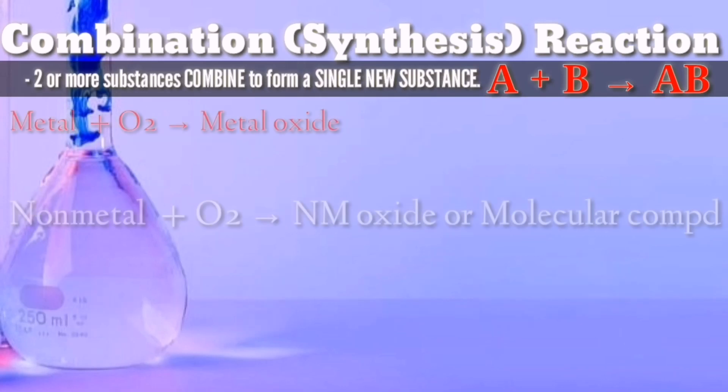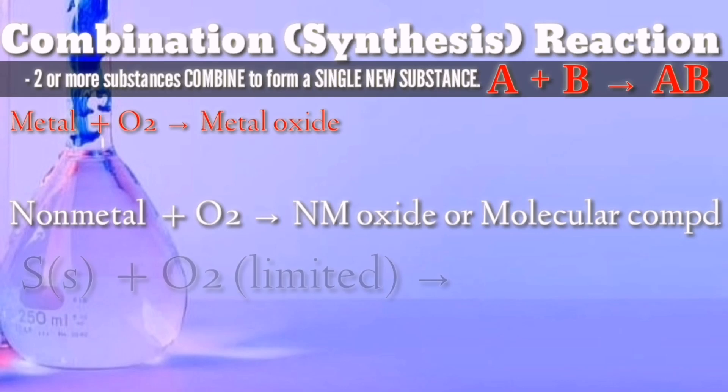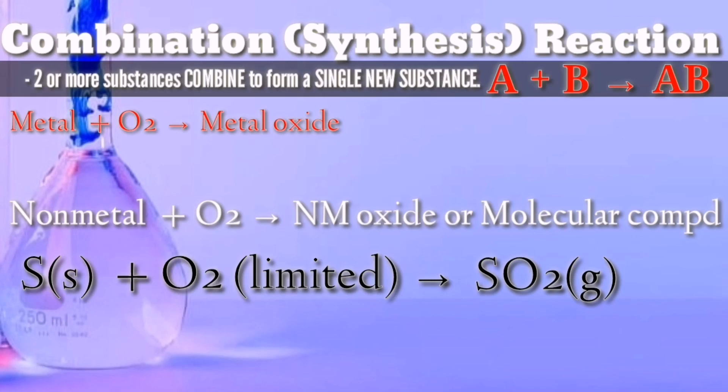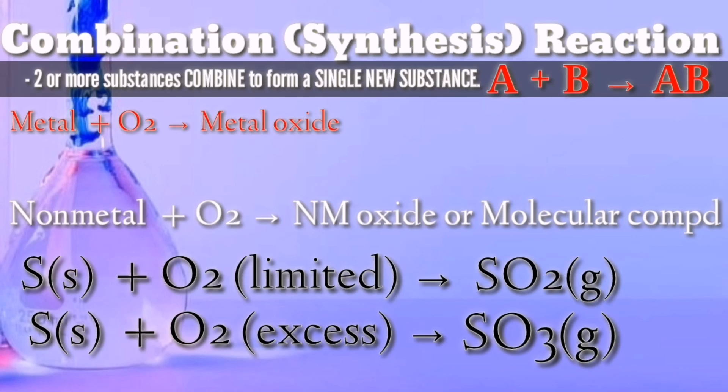In another case, when non-metal reacts with oxygen, it forms another type of compound: non-metal oxide or a molecular compound. Sulfur reacts with oxygen to form sulfur dioxide. Remember, when non-metal reactants react with one another, the product is a molecular compound. Often, the non-metal reactants can combine in different ratios and produce different products. Sulfur can also combine with oxygen to produce sulfur trioxide.